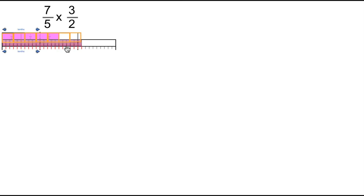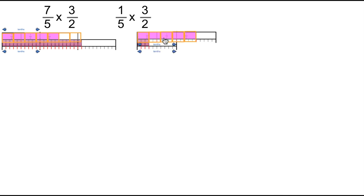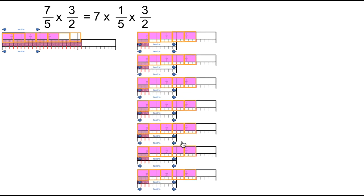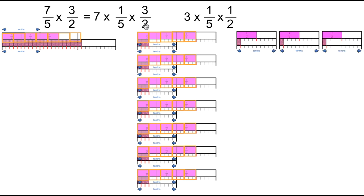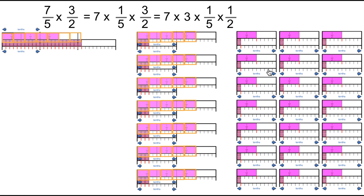So seven-fifths of three-halves is 21 tenths. This is just seven times one-fifth times three-halves — seven times the one-fifth of three-halves we previously had. We can visually represent that as seven of these representations and still get 21 tenths. Similarly, we can think of one-fifth of three-halves as three times one-fifth times one-half, and there are seven of these, giving us 21 tenths. Either way — using the commutative property or visually — we get 21 tenths.